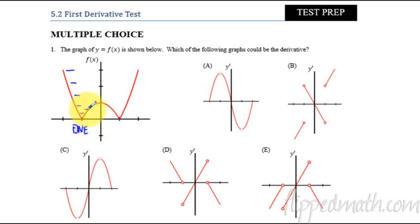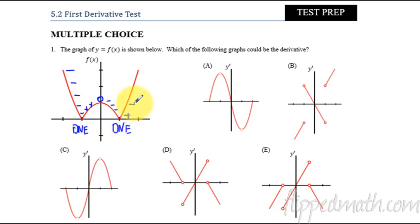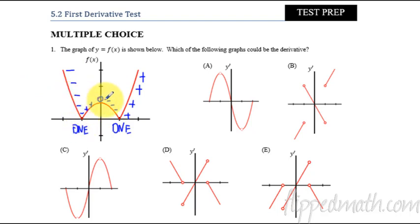Then we go positive, positive, zero, negative, negative, negative, does not exist again. And then we go positive, positive, positive, positive. So we want a graph that is going to be negative y values, no derivative, positive, zero, negative. Okay, so let's think about that.